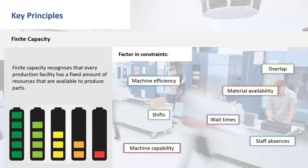We also need to understand the capability of the machine and the operations it can produce. We may have a cell of machines that can all do the same work, except particularly large components that only fit on one machine with a larger bed or chuck. Other constraints include whether we need particular people to run particular machines — if that staff member is absent, how do we accommodate that? Are there wait times between operations, such as a painting operation where we can't assemble until the paint is dry? And what about availability of material — if we have to wait two weeks for material, we can't start everything immediately.